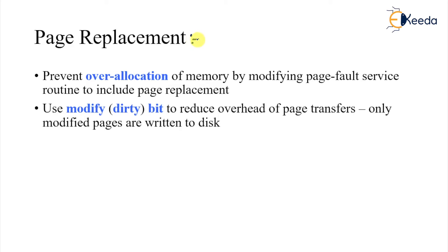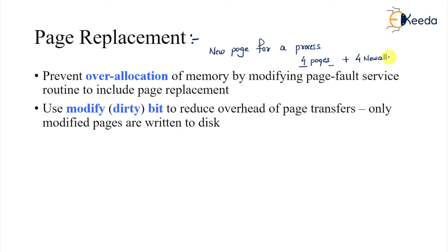There are two very important points. First, it prevents over-allocation of memory. If you keep bringing new pages for a process — suppose we started with four pages allocated and there are four page faults causing four new allocations — that takes you to a total of eight allocations, which would be an over-allocation.